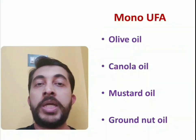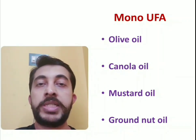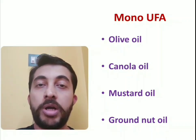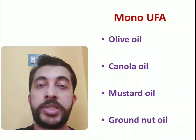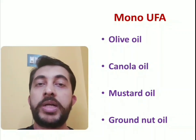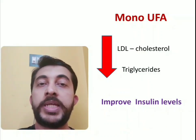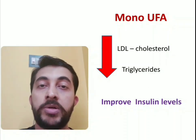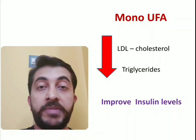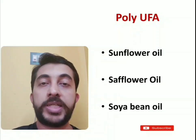Then there are monounsaturated fatty acids — oils with a single double bond. These include olive oil, canola oil, mustard oil, and groundnut oil. The first three contain a very good amount of monounsaturated fatty acids, and groundnut oil contains about 50% unsaturated fatty acids. The benefits are that they can reduce LDL cholesterol levels and to some extent triglycerides. Olive oil has also been shown in studies to improve insulin levels, which is an additional advantage.